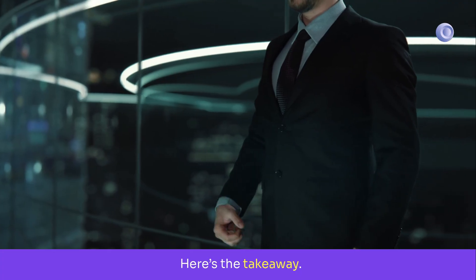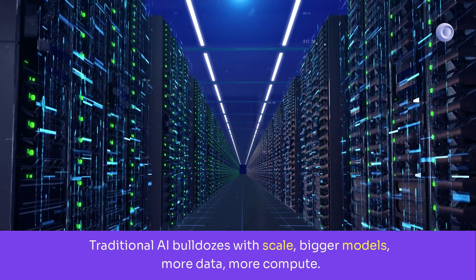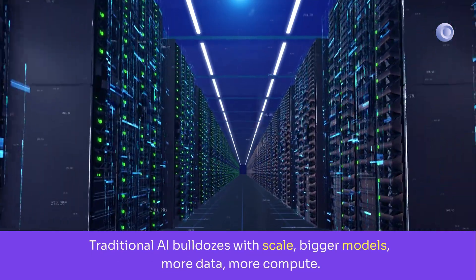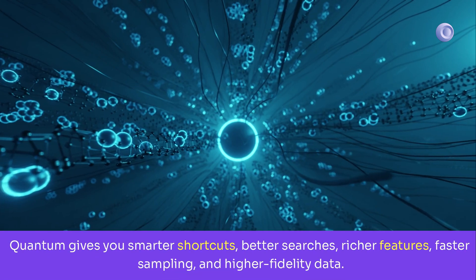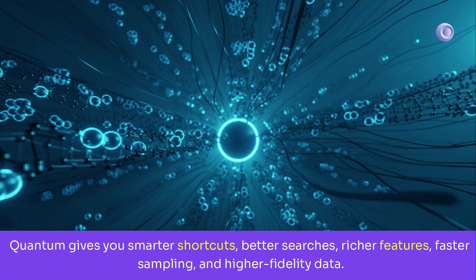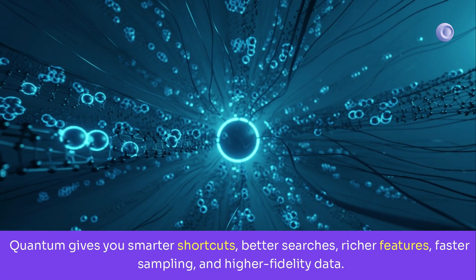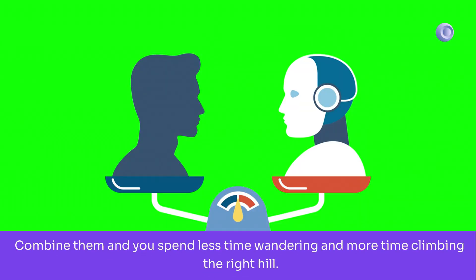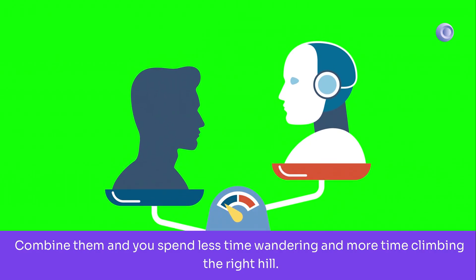Here's the takeaway. Traditional AI bulldozes with scale, bigger models, more data, more compute. Quantum gives you smarter shortcuts, better searches, richer features, faster sampling, and higher fidelity data. Combine them and you spend less time wandering and more time climbing the right hill.